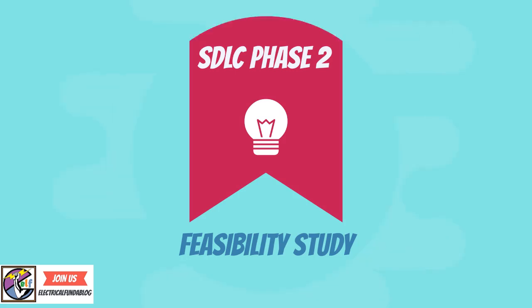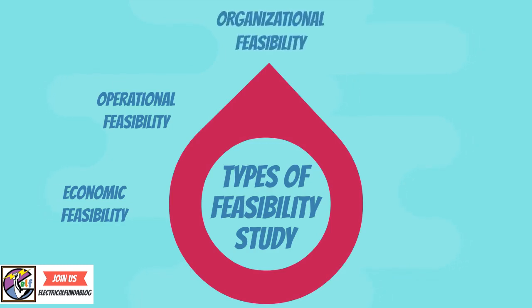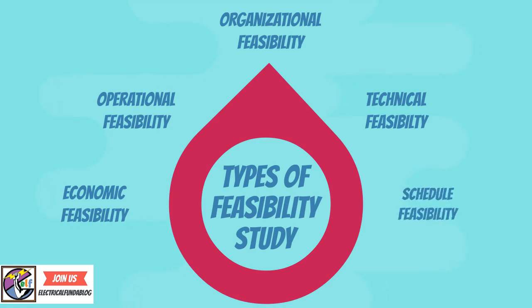Feasibility study types include: Economic feasibility — whether the project can be completed within the budget. Operational feasibility — whether the problem can be solved with the existing and proposed system in the user's environment. Organizational feasibility — whether the project can be handled consistently with company policies and objectives. Technical feasibility — whether the problem can be solved with the present computer system and available resources. Schedule feasibility — whether the project can be completed within the given time frame.